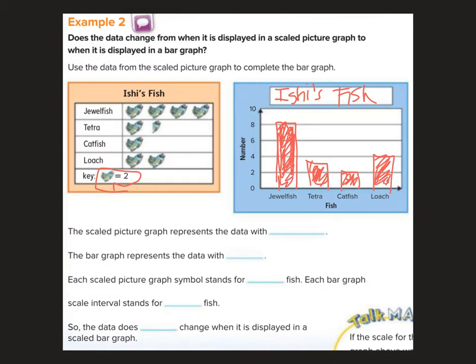The scaled picture graph represents the data with pictures. The bar graph represents the data with bars. Each scaled picture graph symbol stands for two fish. Each bar graph scale interval stands for two fish, right? Each bar is worth two more. So the data does not change when it is displayed in a scaled bar graph. It's just kind of picking, again, which one you'd prefer. Sometimes we do say line graphs are for over time, or there's kind of different basic rules for them. But really, if you're making up the data or collecting the data, you can choose how you'd like to display it.